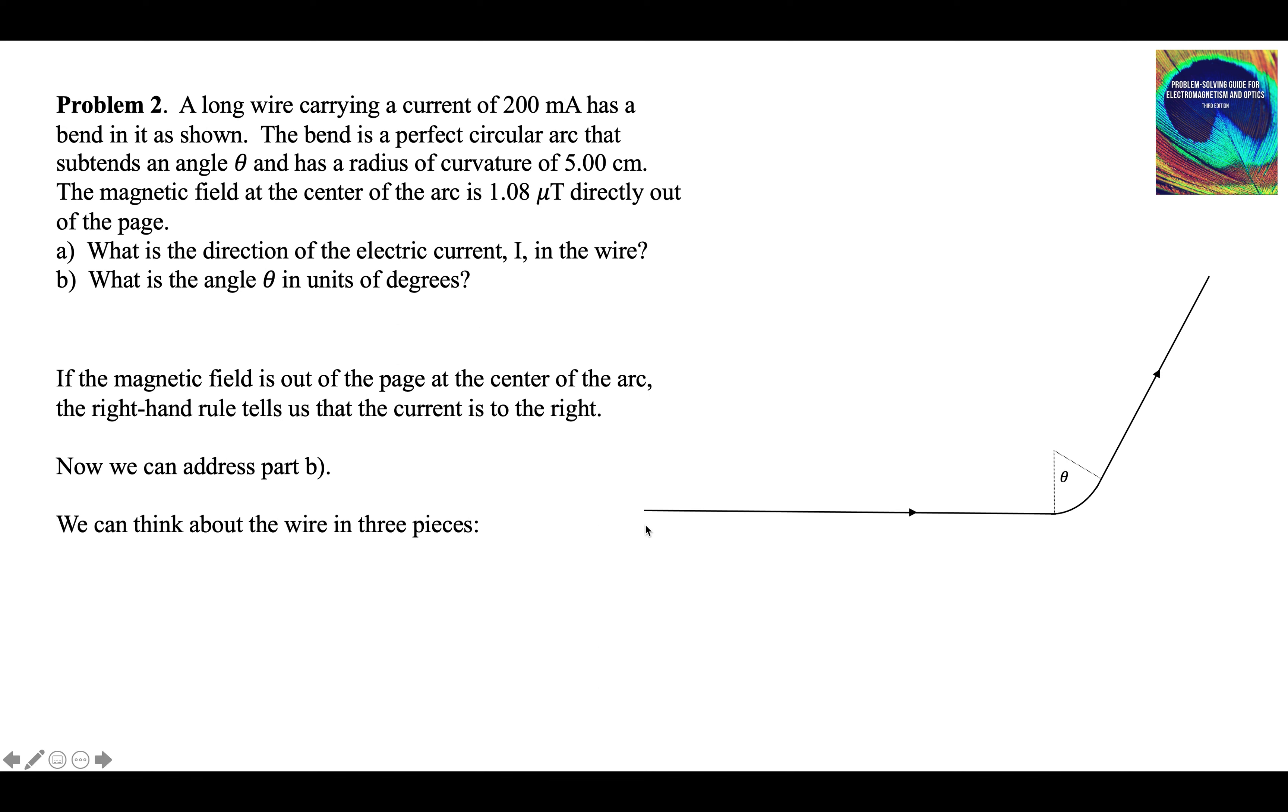We can think about this wire in three pieces. We have a long, straight piece here, and we have an arc right here, and then we have another long, straight piece right here. Horizontal wire coming in from the left, the arc, and then the straight section going up and to the right.